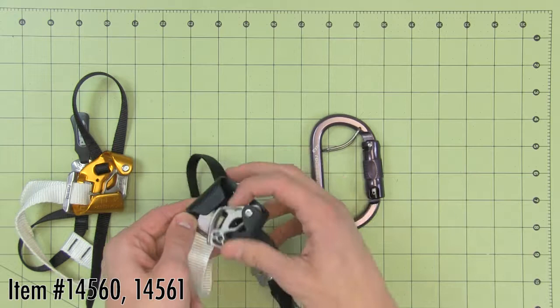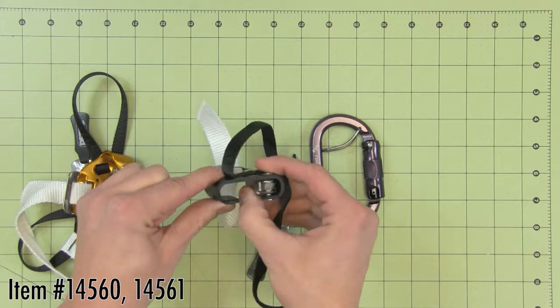The Pantin Foot Ascender from Petzl comes in right or left. It is commonly used with a Croll, Ascension, or Basic. It has become an essential tool for SRT climbing, including use with a rope wrench.